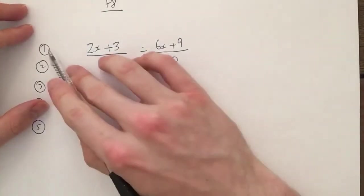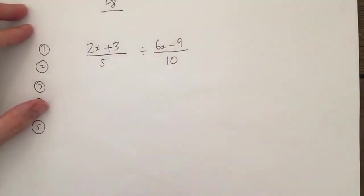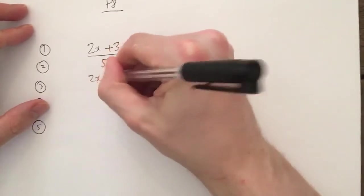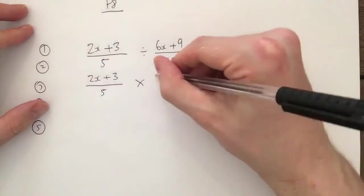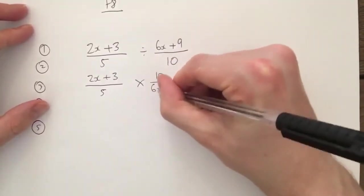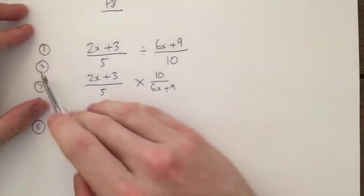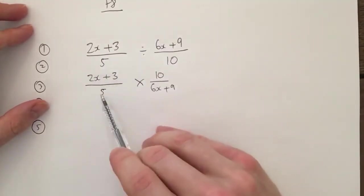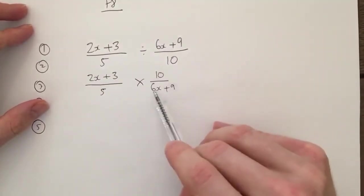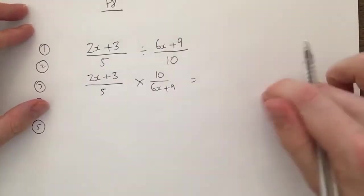Okay, keep change flip. That's our first step here because I'm dividing. So therefore it'll be 2x plus 3 over 5, that stays the same, times by flip that, 10 over 6x plus 9. Good. Right, second step, can we factorize? Can we factorize this? Nope, nope, nope, yes.